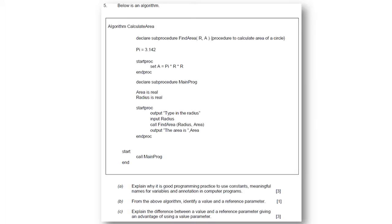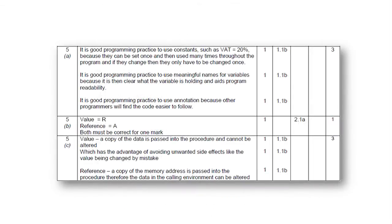Here's an extract from a typical algorithm question from Component 1. An algorithm is provided and learners are required to study the algorithm and respond, in this case to a question that involves two assessment objectives. The mark scheme clearly indicates where the marks are to be allocated and the assessment objectives allocated to each mark. The A and B in this example, and throughout the mark scheme, denote which element of each assessment objective is being assessed. For example, AO1.1b denotes that the understanding strand of AO1 is being assessed, and AO2.1a denotes that the applying knowledge element of AO2 is being assessed.